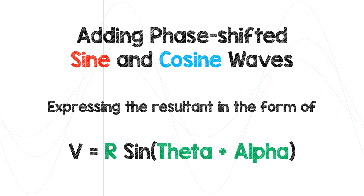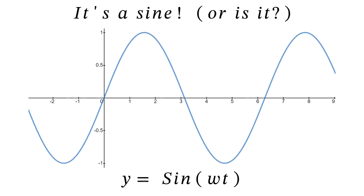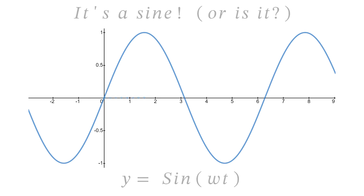Welcome to this video on adding phase-shifted sine and cosine waves and expressing the resultant voltage in the form of v equals r sine theta plus alpha. A sine wave starts at the origin and goes up, but it could also be a phase-shifted cosine wave lagging by 90 degrees or pi over 2 radians.